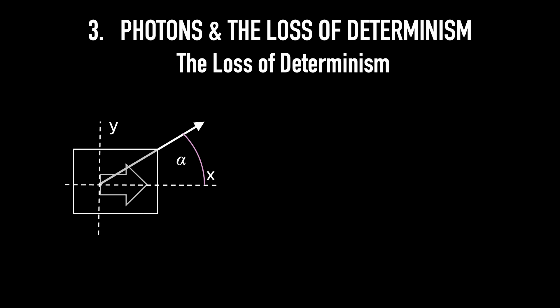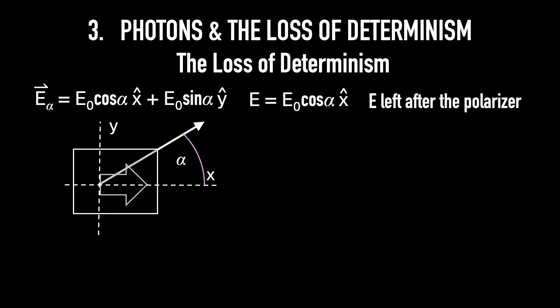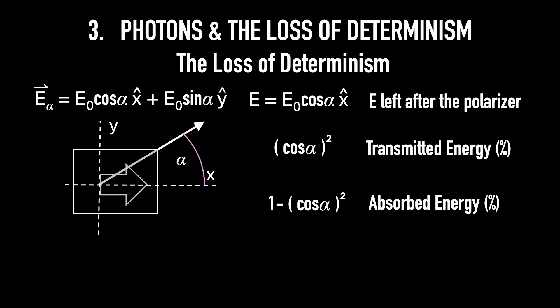As you've studied electromagnetism, we send an electric field E alpha, which is E0 cos alpha x-hat plus E0 sin alpha y-hat. After the polarizer, E is just E0 cos alpha x-hat. That's all that is left. The fraction of energy that goes through is cos squared alpha, and the fraction that doesn't go through is 1 minus cos squared alpha.